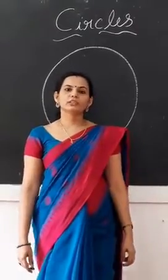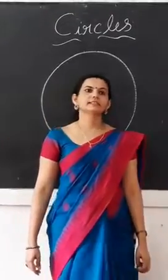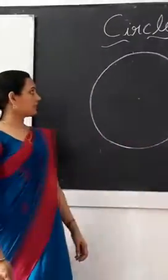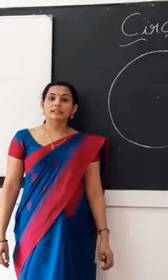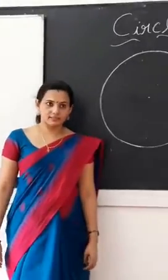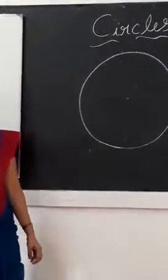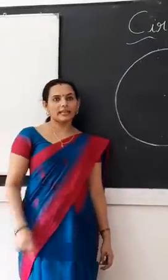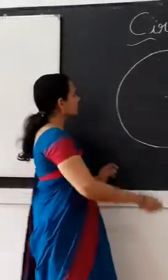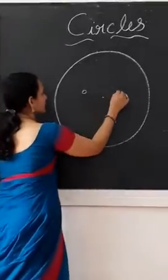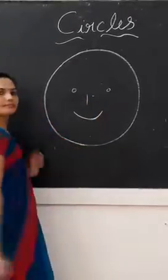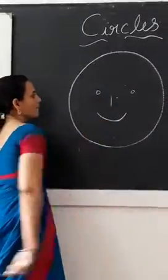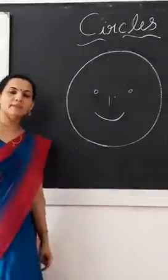Today we are going to learn about the chapter circles. We are all familiar with the word circles from smaller classes onwards. For example, just think about the circular things around us — the top portion of a well, and the most familiar one nowadays is a smiley, which says be happy and keep smiling.